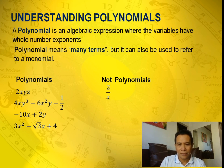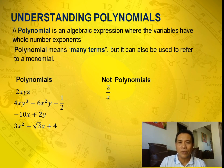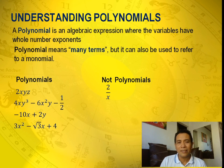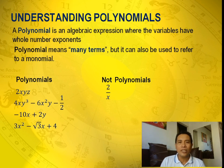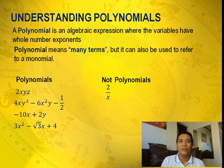2 over x. This is not an example of a polynomial because the variable x is in the denominator — it should be in the numerator. If you try to put the variable x in the numerator, it is equal to 2x raised to negative 1. So the exponent is negative 1, which means that's not an example of a polynomial.